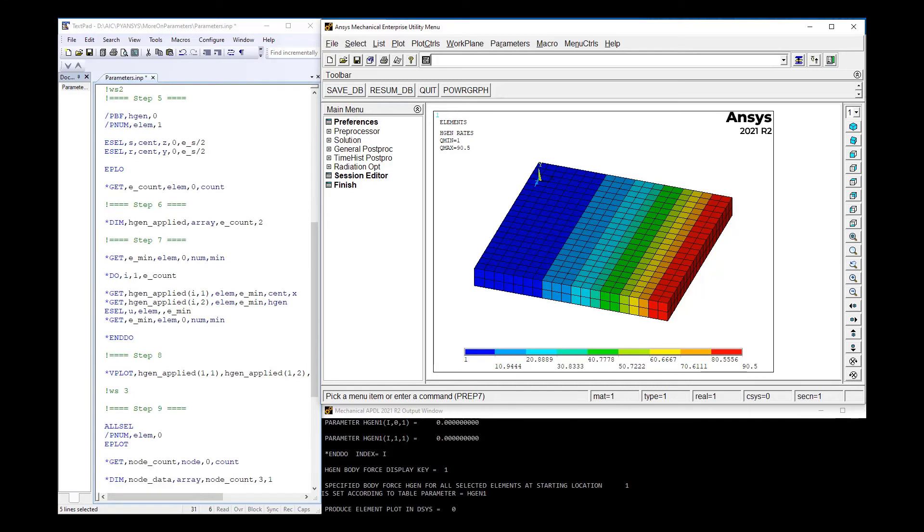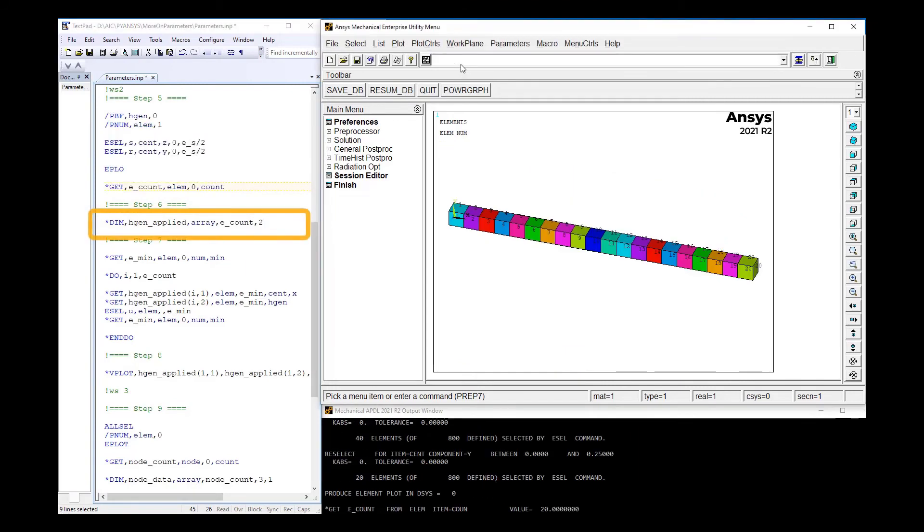For the second workshop, let's imagine that we are given the model with the load applied and would like to verify the values with some other method. We can gather the applied load of one row of elements into an array, then plot the array value using an XY graph style. To start, let's use the ESEL command to select one row of elements, then *GET the count of the elements. Next we define an array with the number of rows equal to the element count and two columns: one to store the X location of the element centroid and the other to store the heat generation value.